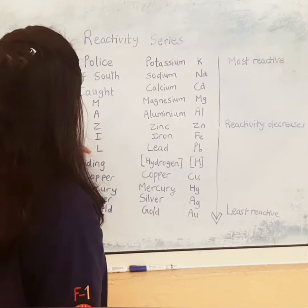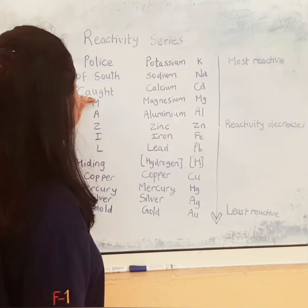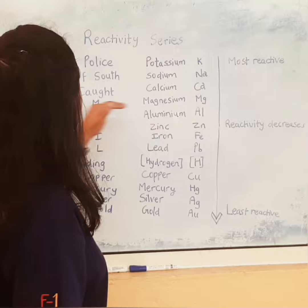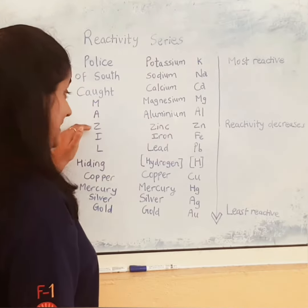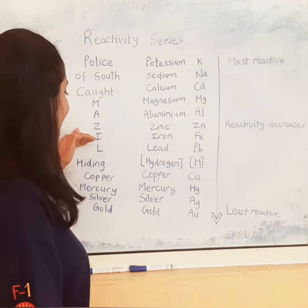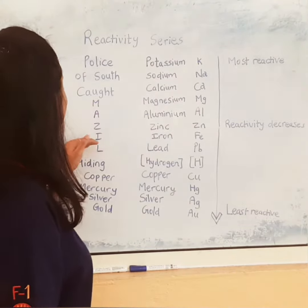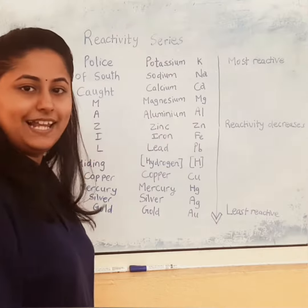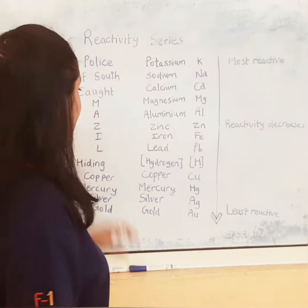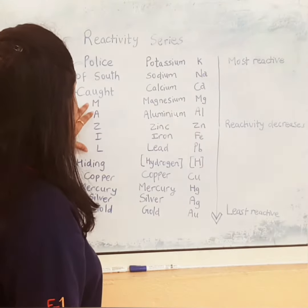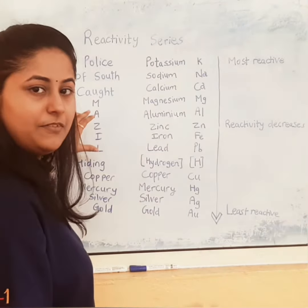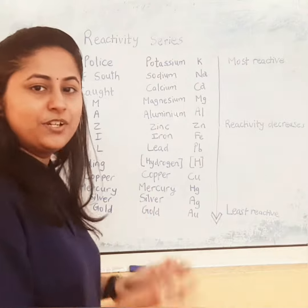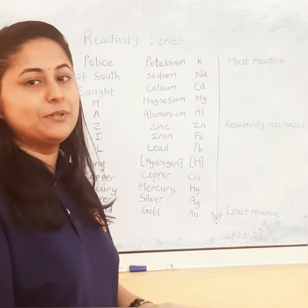Mazile: M is magnesium, A is aluminium, Z is zinc, I is iron, L is lead. Mr. Mazile is a person's name, which makes it more easy for you to remember.